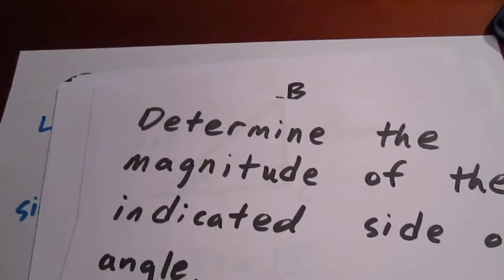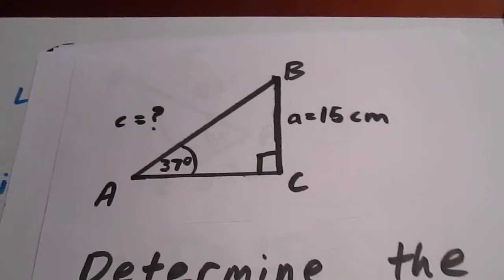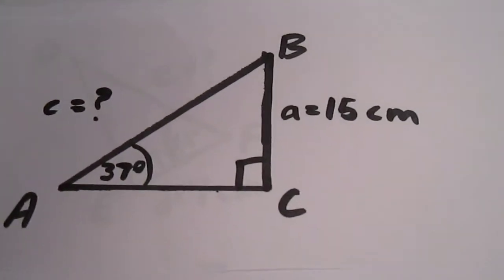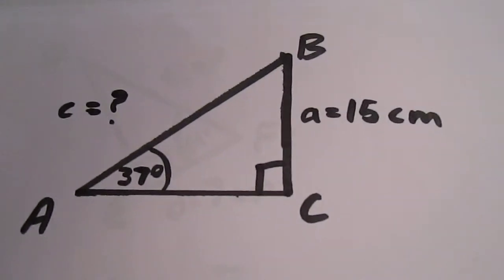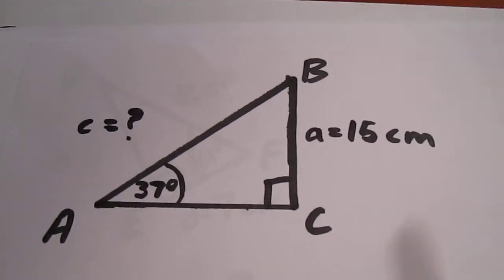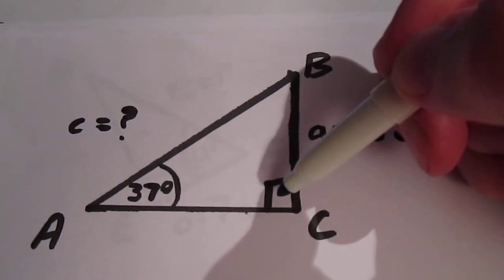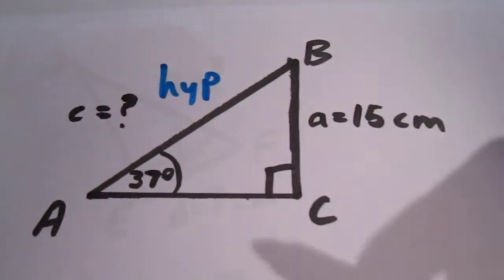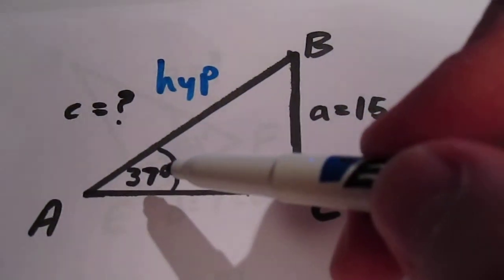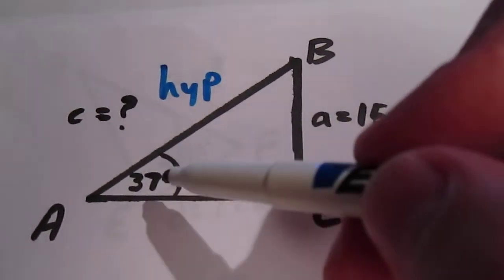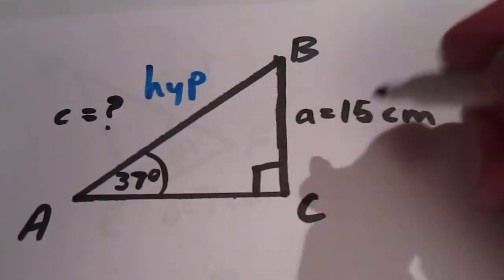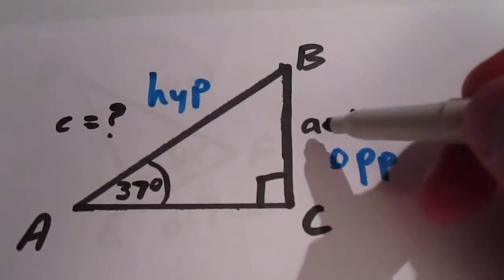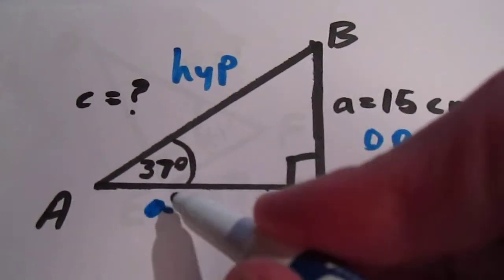We're going to take a look at this first question. We would like to know what C equals, and we know that it's part of this triangle right here. The first thing we want to do is label the hypotenuse. Since this is the right angle, this must be the hypotenuse directly across. That tells us that the 37 degree angle has this side as its opposite because it's directly across, and that leaves this other side as the adjacent.